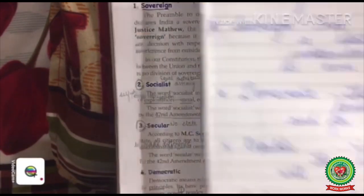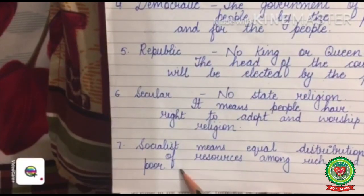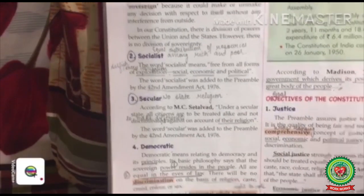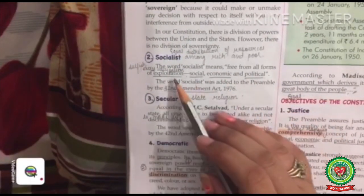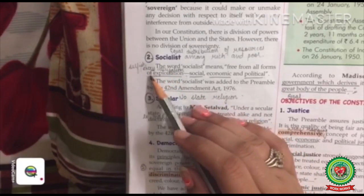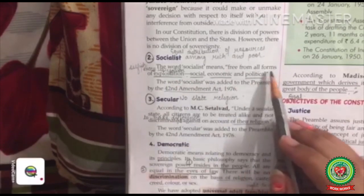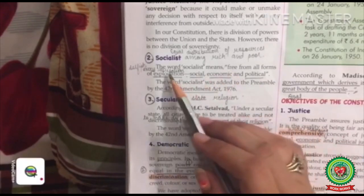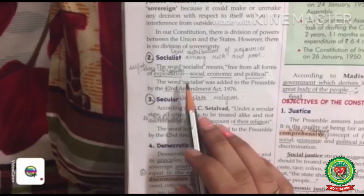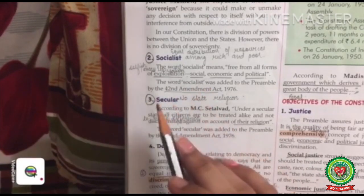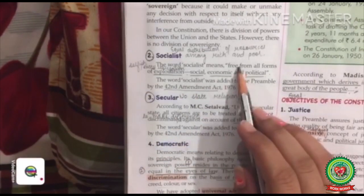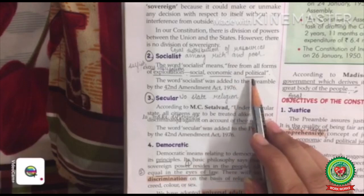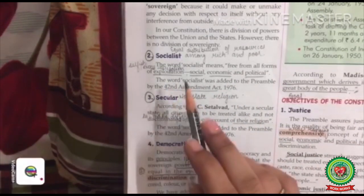Next comes Socialist. Socialist means equal distribution of resources among rich and poor. It also means free from all forms of exploitation — selfish or excess utilization. Free from social exploitation means all citizens should be treated equally irrespective of birth, caste, color, or religion. Free from economic exploitation means equal pay for equal work. Free from political exploitation means all citizens should have the right to participate in the political process irrespective of their caste, creed, and religion.